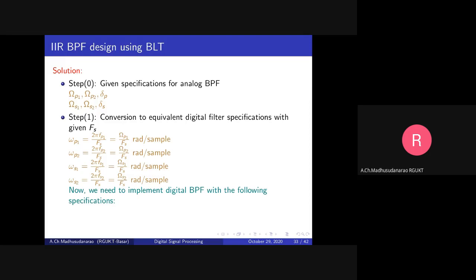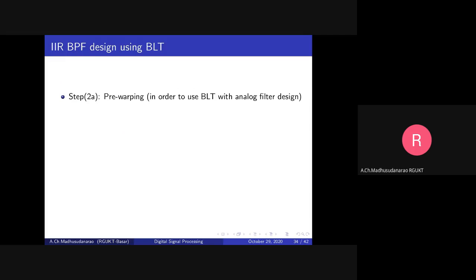Now we need to implement a digital band pass filter with specifications: omega_p1, omega_p2, delta_p, omega_s1, omega_s2, delta_s. Our plan is to design this digital filter with the help of analog filter design techniques using bilinear transformation. But since bilinear transformation introduces a warping effect, we need to do pre-warping to avoid it. The pre-warping formula is: capital Omega_i equals (2/T) tan(omega_i / 2), giving omega_p1' and omega_p2' as the pre-warped passband cutoff frequencies.